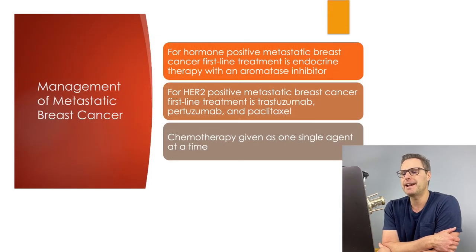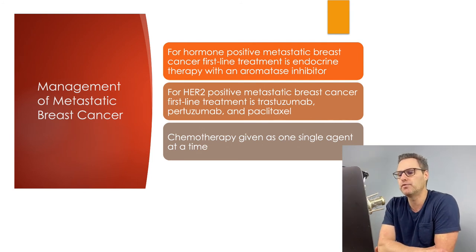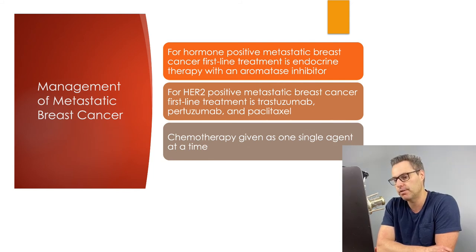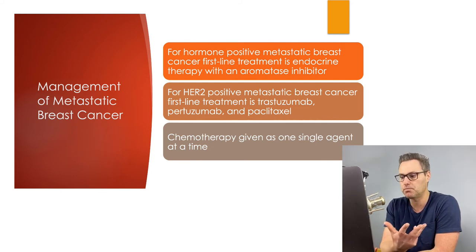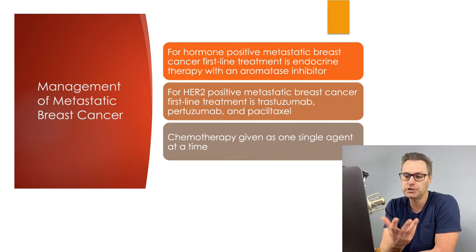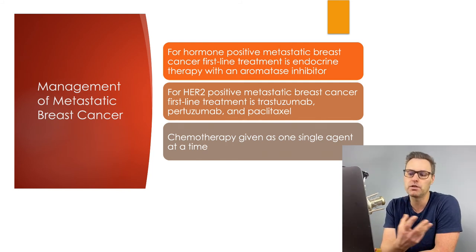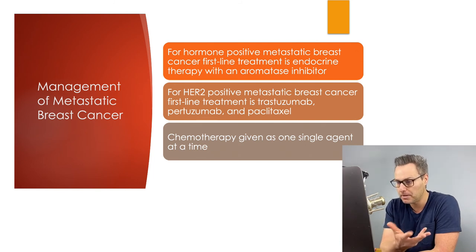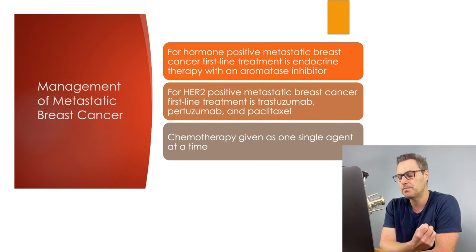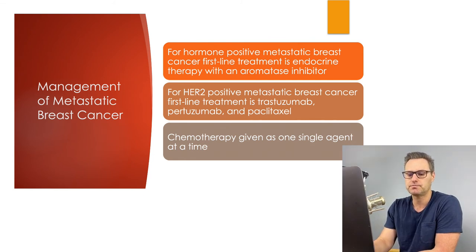When managing metastatic breast cancer, the goal is to improve quality and length of life and relieve symptoms. For hormone positive metastatic breast cancer, first line treatment is endocrine therapy with an aromatase inhibitor, unless symptoms are very severe, rapidly progressing, or end organ damage is occurring — in which case chemotherapy is started. Chemotherapy is given as one single agent at a time to limit side effects, as combination therapy does not have an improved outcome compared to a single agent alone. For HER2 positive metastatic breast cancer, first line treatment is trastuzumab, pertuzumab, and paclitaxel.